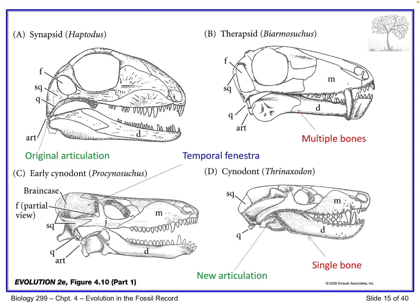Here in a later therapsid - the therapsids branched off the synapsids, and then mammals eventually branched off the therapsids - we still have that same quadrate-articular jaw articulation. We see that the number of bones in the lower jaw seems to be reduced. We see the dentary here still, but we're losing some bones in the posterior portion.